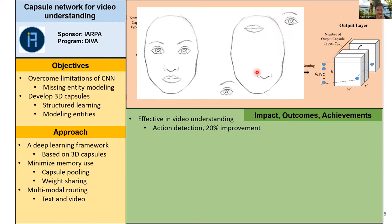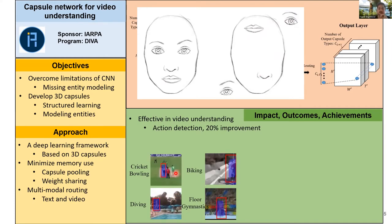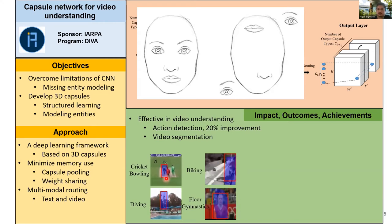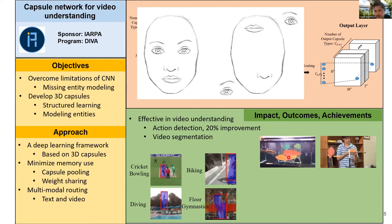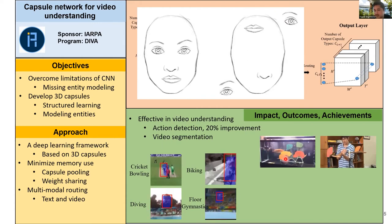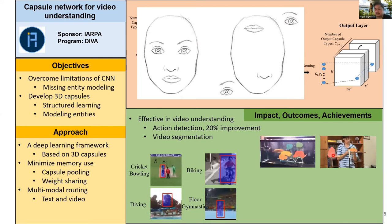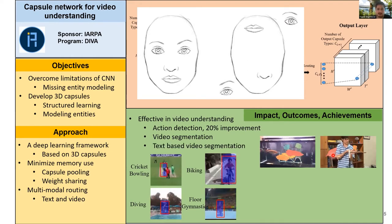We have tried these developed capsules for different problems in video and found them very effective for video understanding. For action detection, we observed around 20% improvement compared to state of the art, which is very impressive. The red box is the ground truth and the blue is the detected activity — most cases it's doing the right job. We also tested this for video segmentation, where we detect all objects with pixel-wise segmentation tracked along time, and we can see these are really nice segmentations.